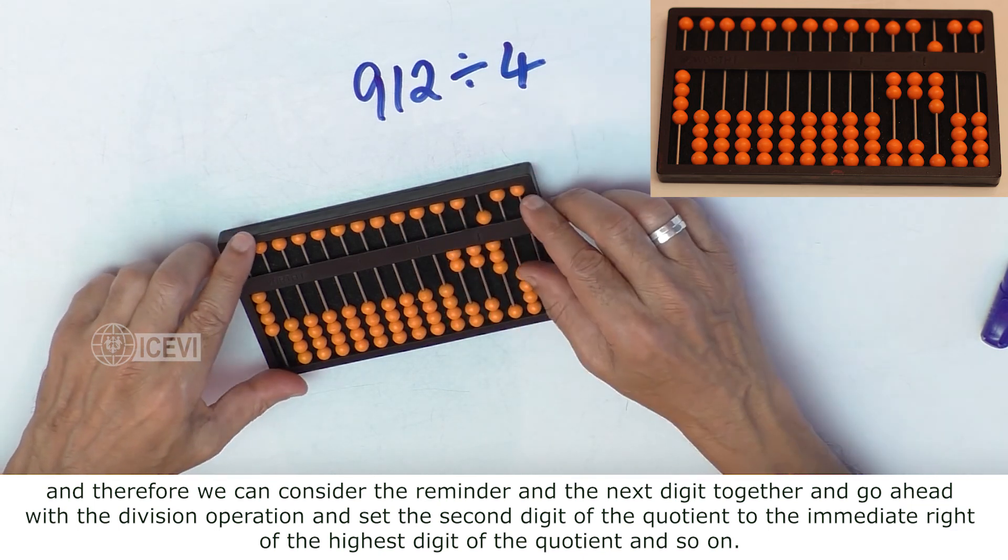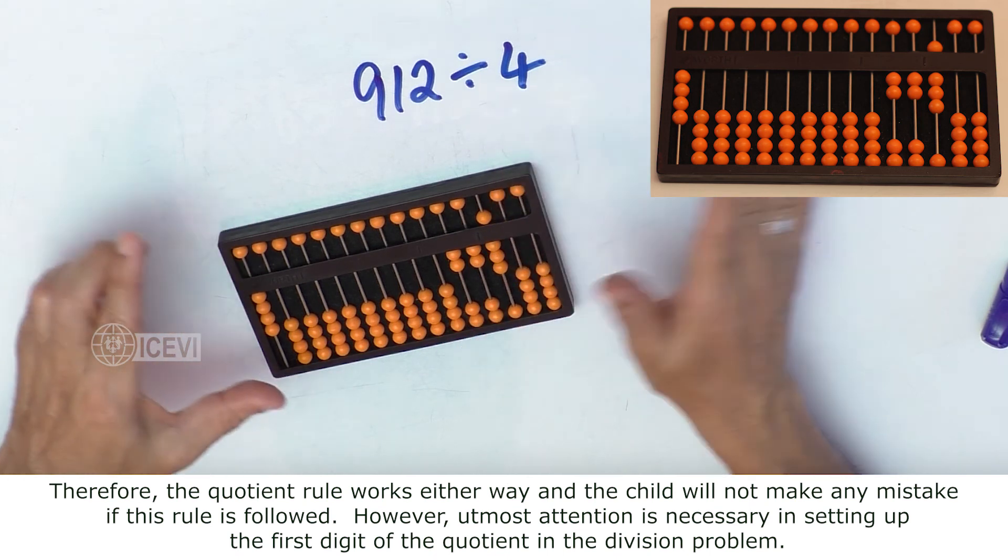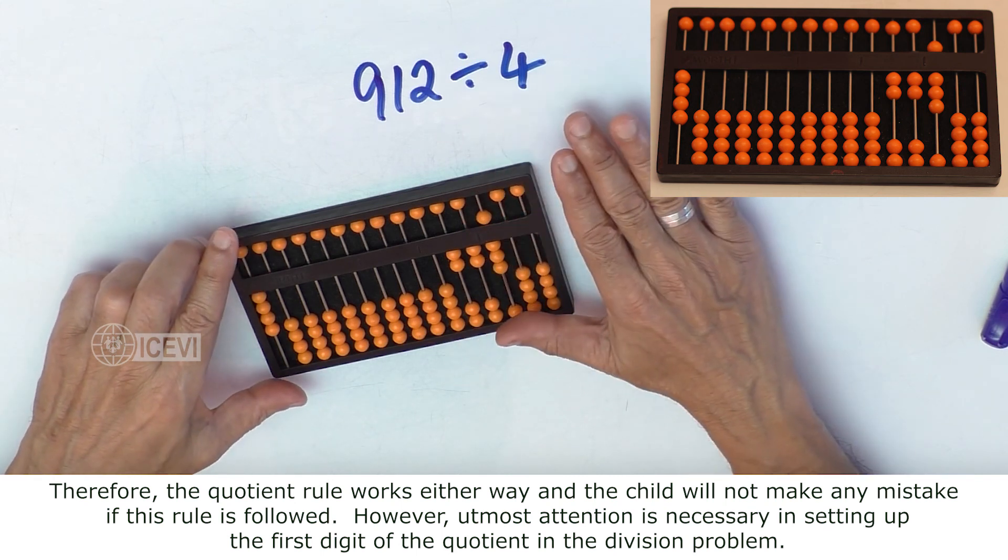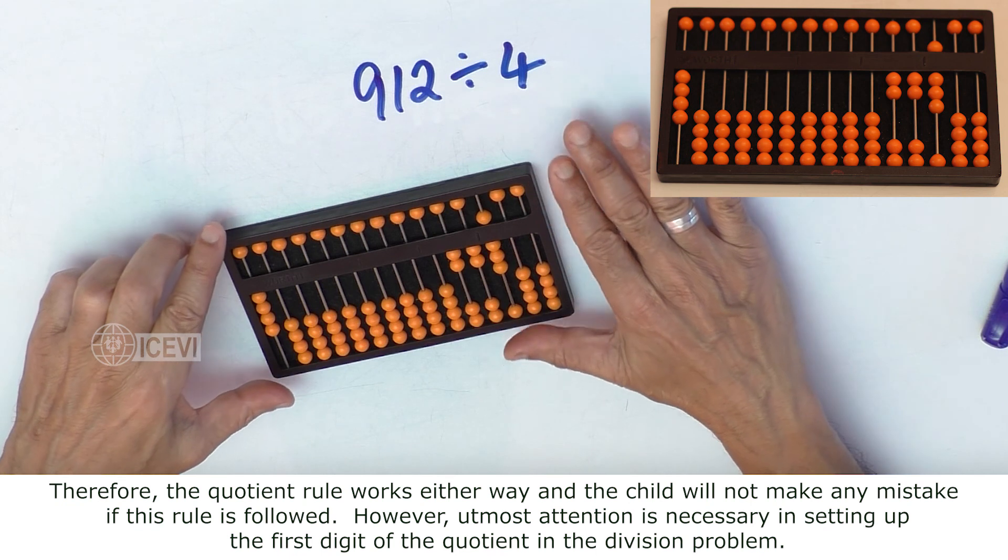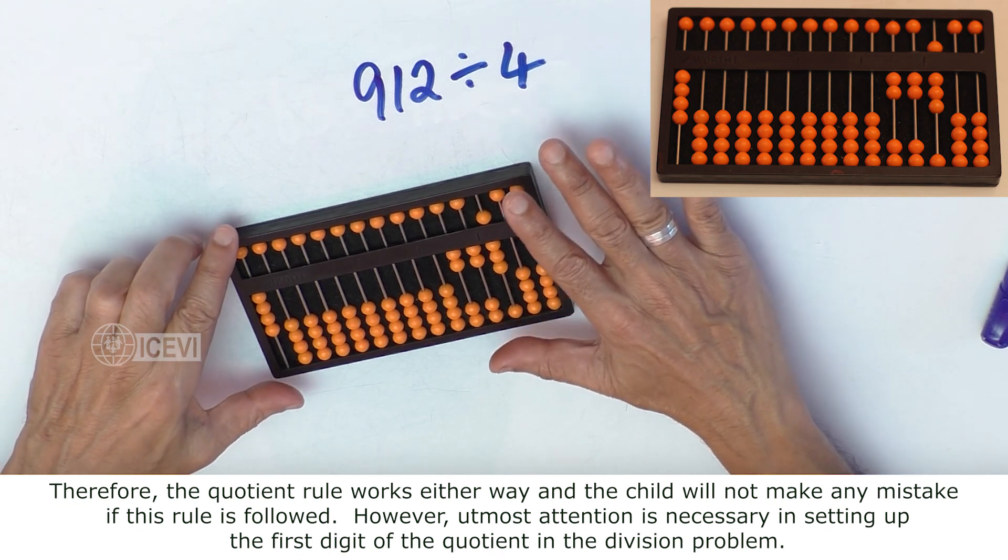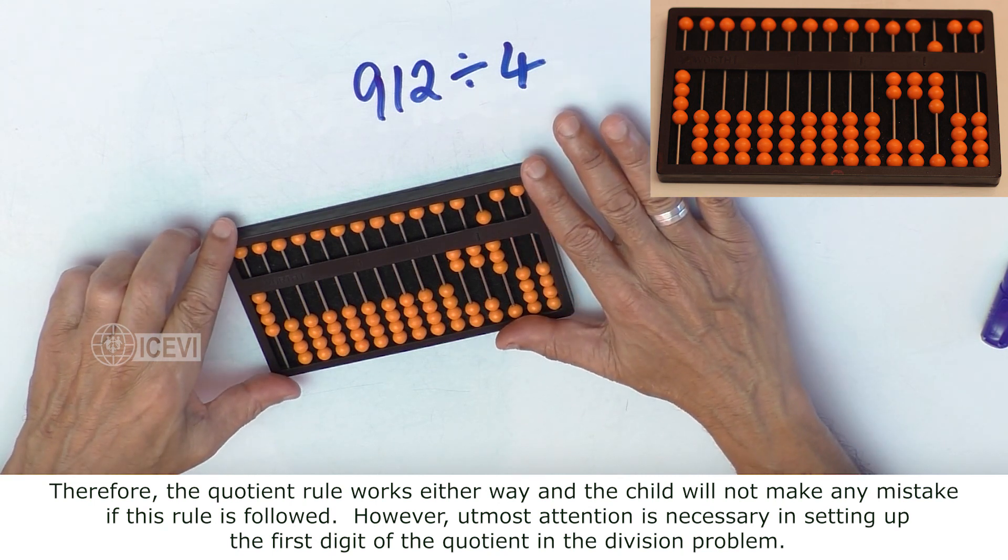Therefore the quotient rule works either way and the child will not make any mistake if this rule is followed. However, utmost attention is necessary in setting up the first digit of the quotient in the division problem.